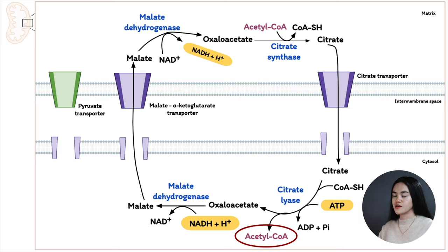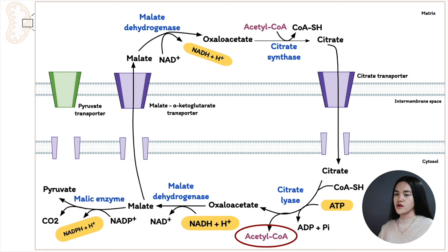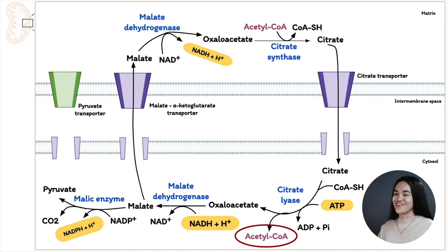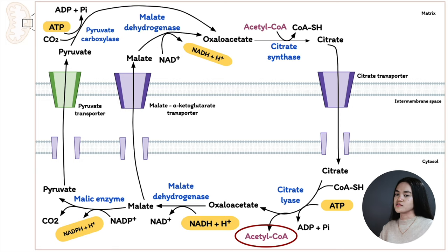Cytosolic malate is also used to produce NADPH needed for fatty acid synthesis: malate is converted to pyruvate by the malic enzyme, producing NADPH. This reaction provides about half of the NADPH needed for fatty acid synthesis; the other half is produced by the pentose phosphate pathway. The pyruvate produced is transported back into the matrix by the pyruvate transporter, where pyruvate carboxylase (requiring ATP) converts it back to oxaloacetate.